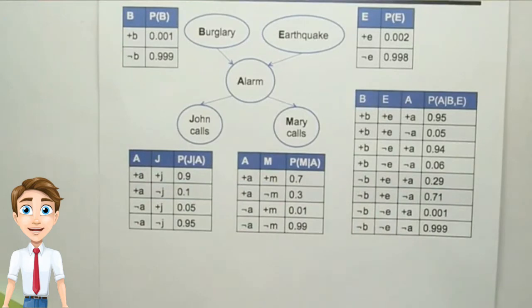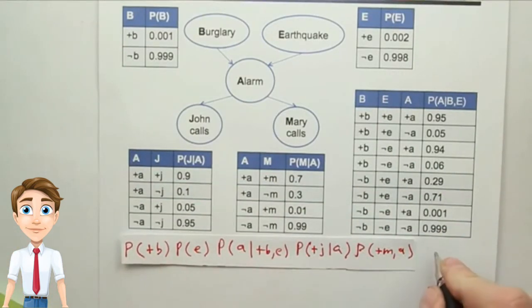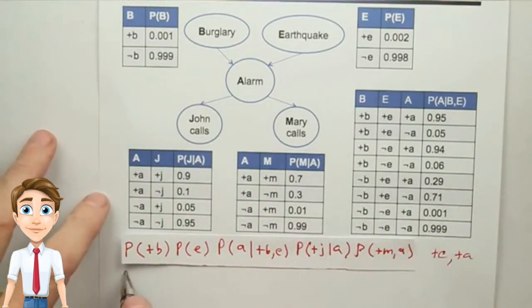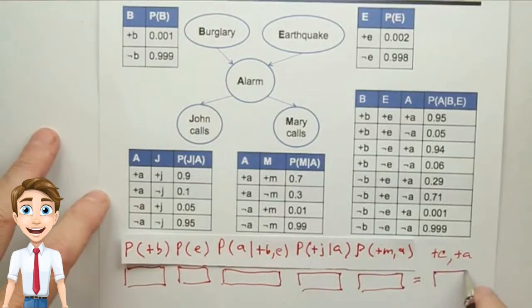Where do we get the numbers to fill in this equation? From the conditional probability tables from our model. So let's put the equation back up and we'll ask you, for the case where both E and A are positive, to look up in the conditional probability tables and fill in the numbers for each of these five terms, and then multiply them together and fill in the product.